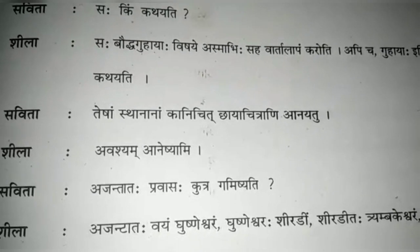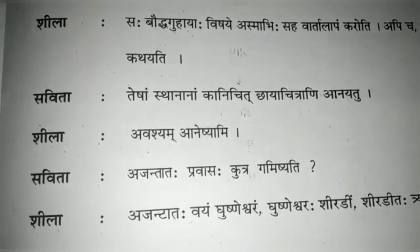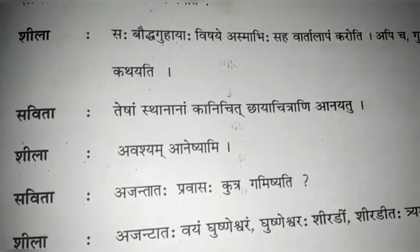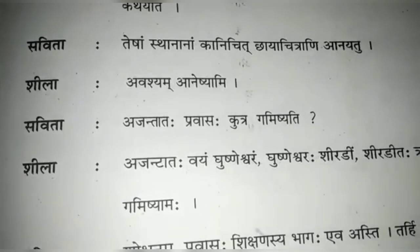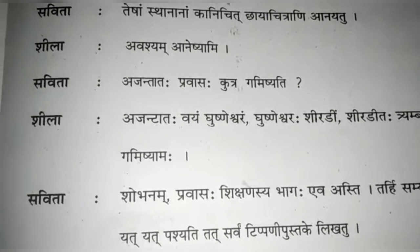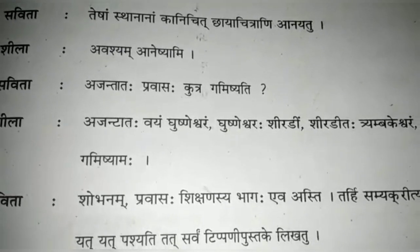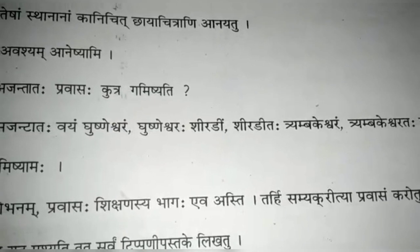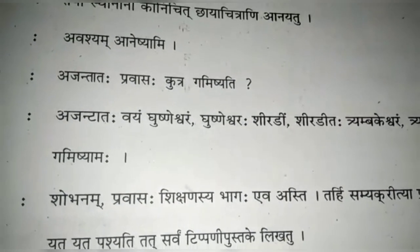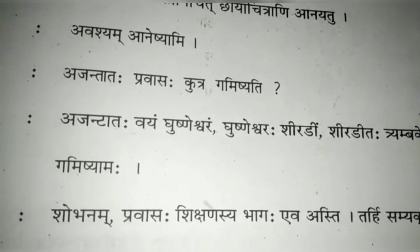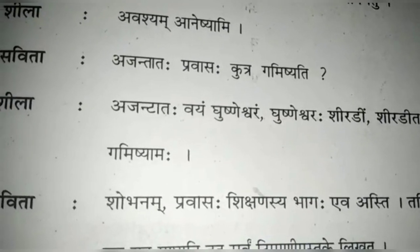Savita says: Testa sthanana kaani chit chaya chitrani anayatu — bring some photographs of these places. Sila says: Avashyam anishyami — I will definitely bring them. Savita asks: Ajantat pravashya kutra ghamishyati — where will your tour go from Ajanta? Sila says: From Ajanta we will go to Gushneshwar, from Gushneshwar to Shirdi, from Shirdi to Trambakeshwar, and from Trambakeshwar to Nasik.